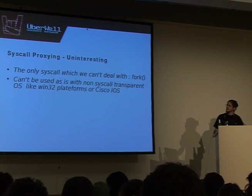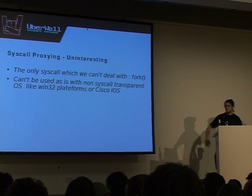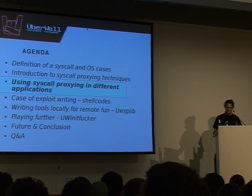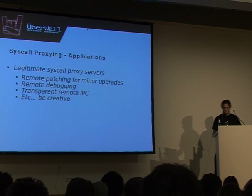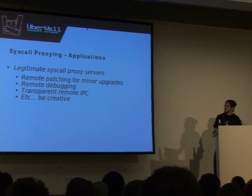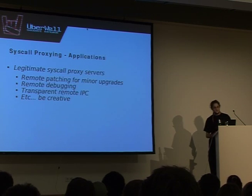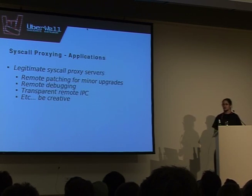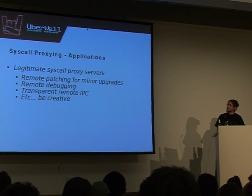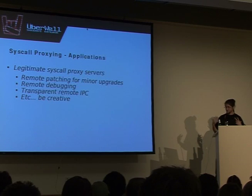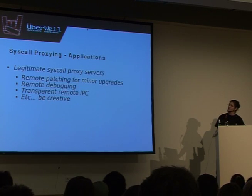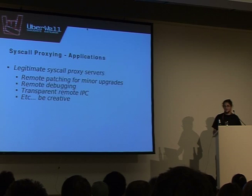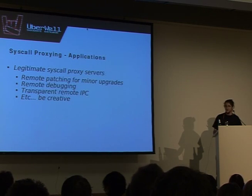For Win32 platform and Cisco IOS you have to deal with it in a different way. How are you using this kind of application? From the good side, what can be interesting with syscall proxying: all this kind of legitimate syscall proxying servers for patching your kernel or your stuff remotely for minor upgrades. Remote debugging your programs with transparent access to the kernel syscall. You can use it as QNX does as remote IPC. You just have to be creative because that's a really powerful interface to the kernel you can have remotely.